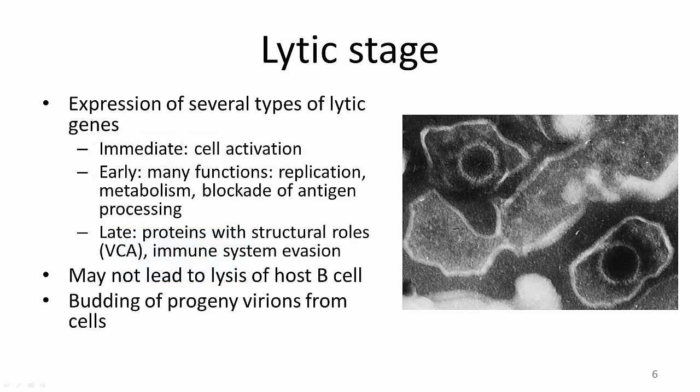In the lytic stage, gene products are produced in three consecutive stages. Immediate lytic gene products act as transactivators, enhancing the expression of later lytic genes. Early lytic gene products serve many functions, including replication, enhancement of metabolism, and blockade of antigen processing. Lastly, late lytic gene products include proteins with structural roles, such as the viral capsid antigen, which helps form the viral capsid, and others that help EBV evade the immune system.